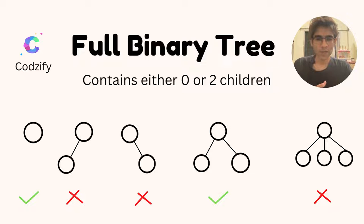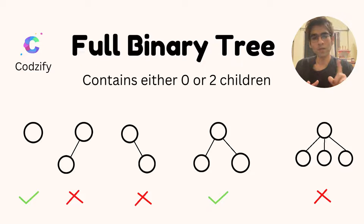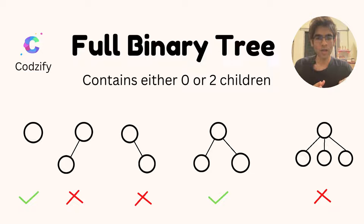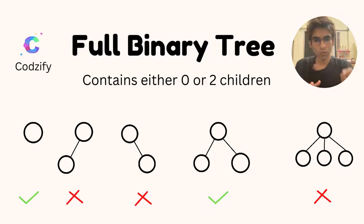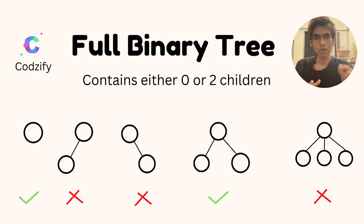The second example contains 1 child, so this is not a full binary tree — it is a binary tree, but not a full binary tree. A binary tree contains 0, 1, or 2 children, while a full binary tree contains only 0 or 2 children.